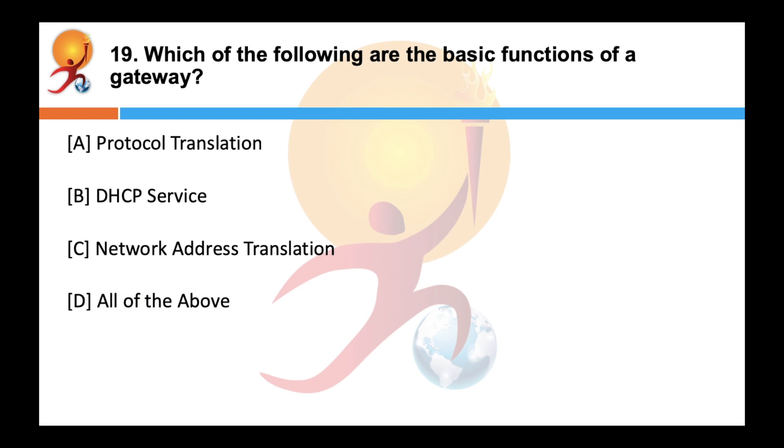Which of the following are the basic functions of a gateway? Correct answer is all of the above. A gateway performs many functions. Some of them are protocol translation, network address translation and DHCP service. It is used to route the traffic from one network to another and to connect LAN to WAN or VPN.